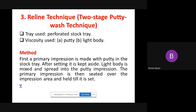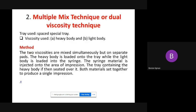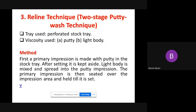Number three is the two-stage or wash technique. The tray is a perforated stock tray. The viscosity types are putty and light body. How do you take the impression? First take an impression with putty. After taking the impression, remove it, put the light body into the impression, and transfer the impression back into the patient's mouth to produce the best detail. That is why we call it the two-stage putty technique.